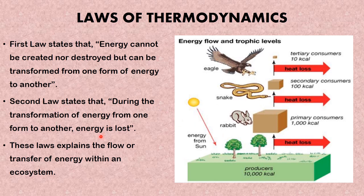The second law states that during the transformation of energy from one form to another, energy is lost in the form of heat. This is the reason only 10 percent of energy is transmitted from one trophic level to the other. For example, if the producer has 10,000 kilocalories, only 10% — 1,000 kilocalories — is utilized by the rabbits, while the rest is lost as heat. From rabbits to snake is 100 kilocalories, and from snake to eagle only 10 kilocalories, while the rest is lost as heat.